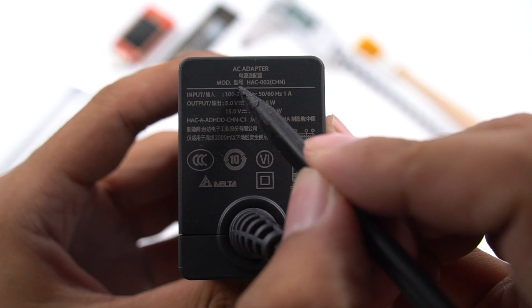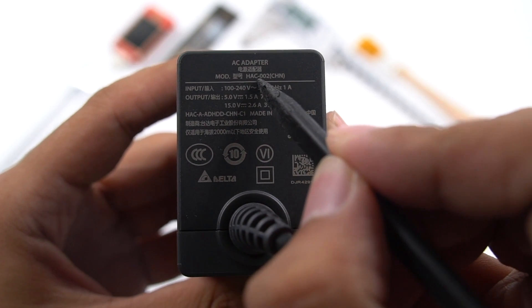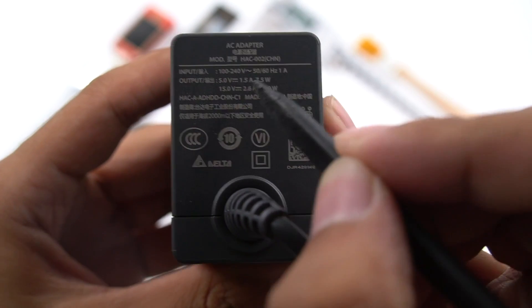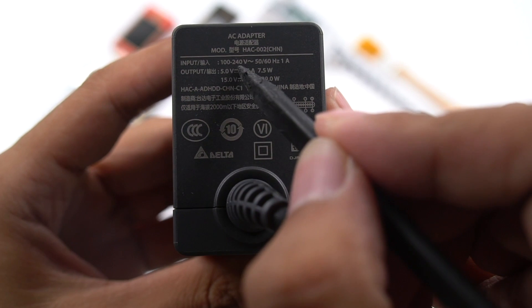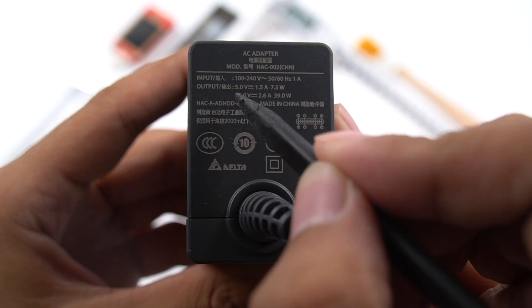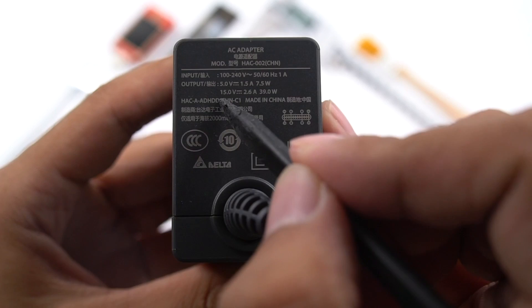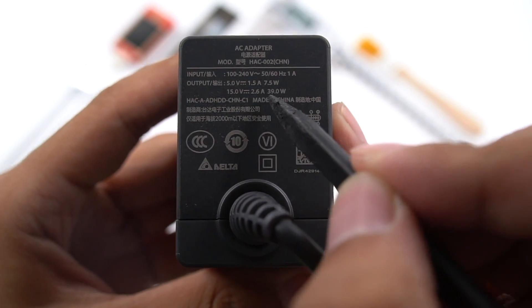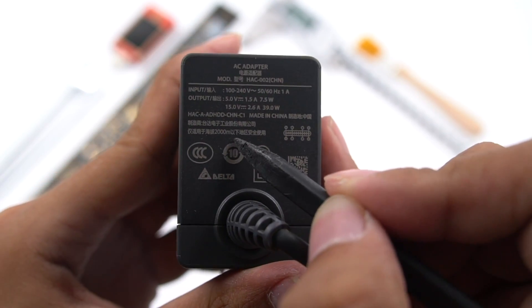Take a look at the charger's specification. Model is HAC-002. Support wide voltage input of 100V to 240V and output of 5V 1.5A or 15V 2.6A. Manufacturer is Delta Electronics.